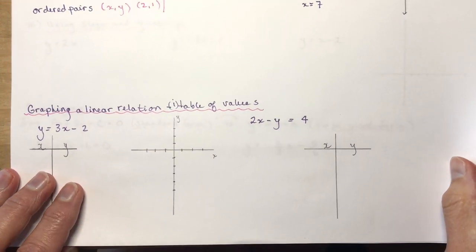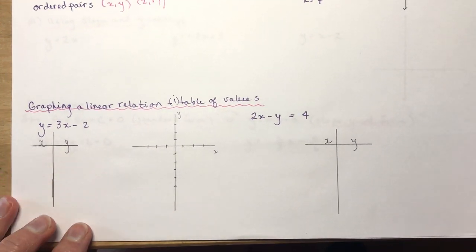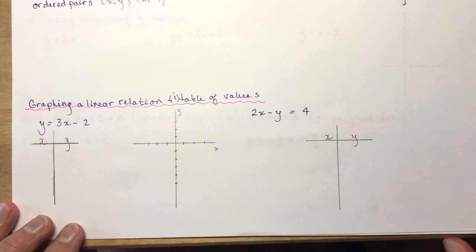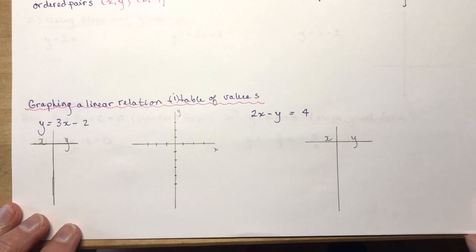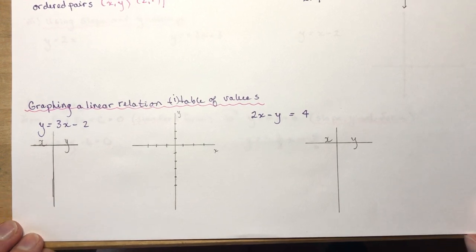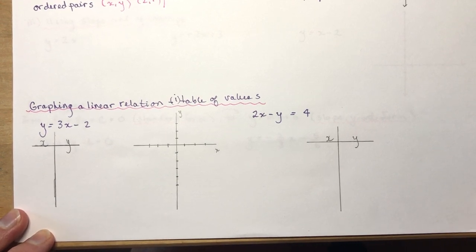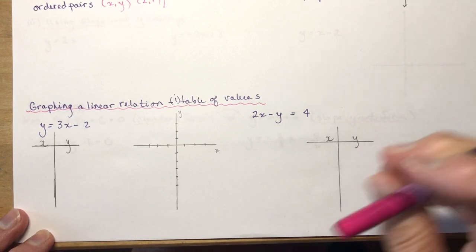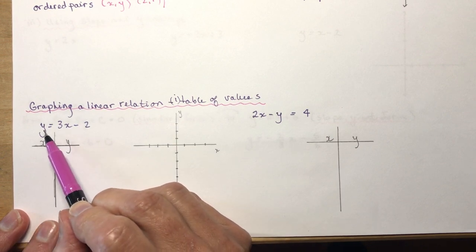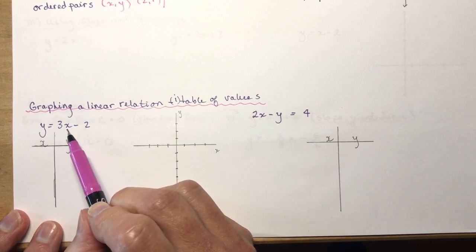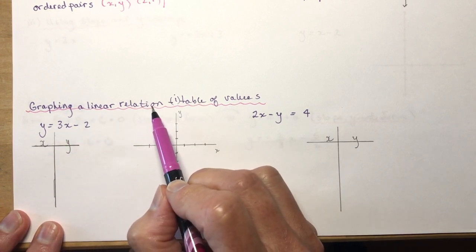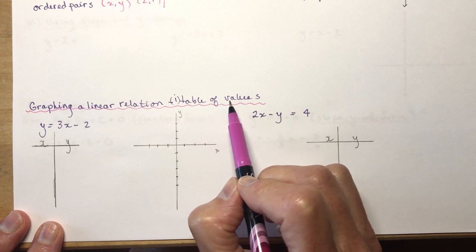So let's talk a little bit about graphing a linear relation. There are three different ways — actually four if you have a graphing calculator. But the kinds of graphing we're going to talk about here is graphing that you would do yourself without a calculator, using your own head. So let's take a look at this equation: y equals 3x minus 2. I want to graph it using a table of values.